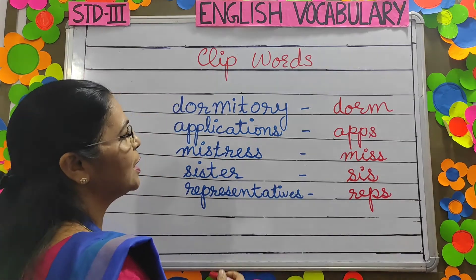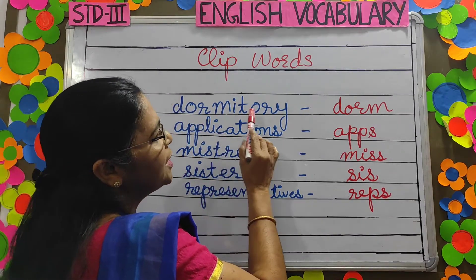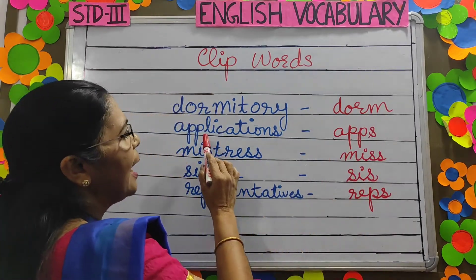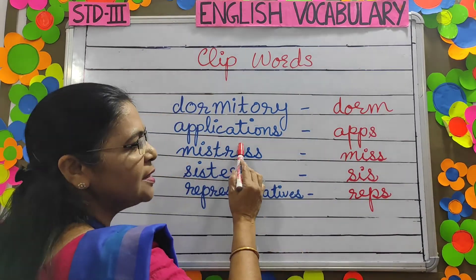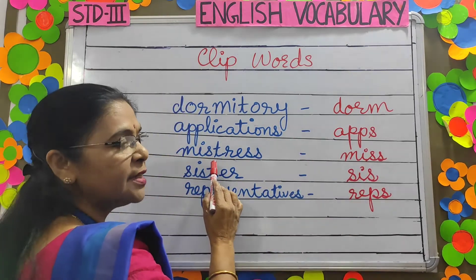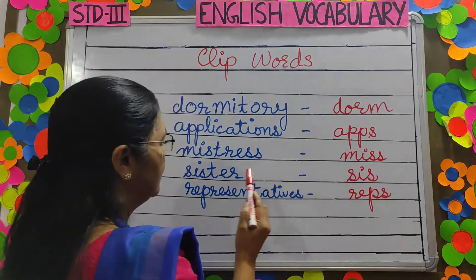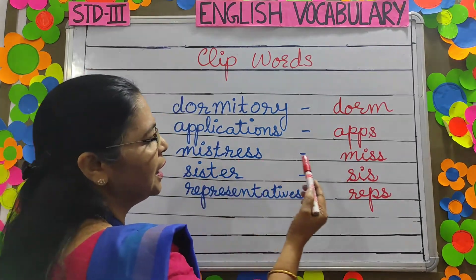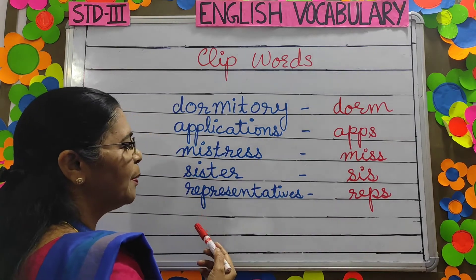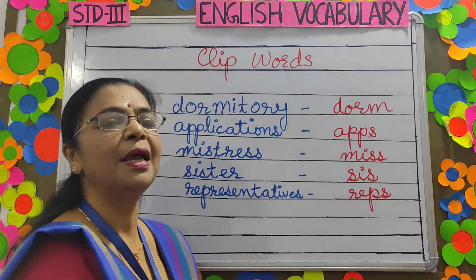Let's revise once more. Dormitory — dorm. Applications — apps. Mistress — Miss. Sister — Sis. Representatives — Reps.